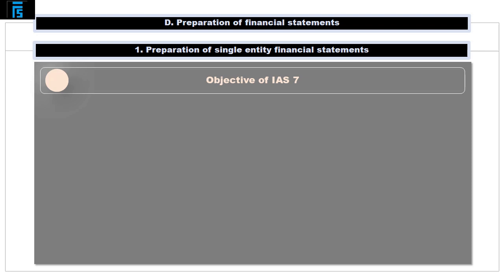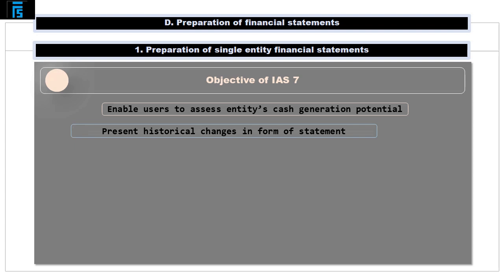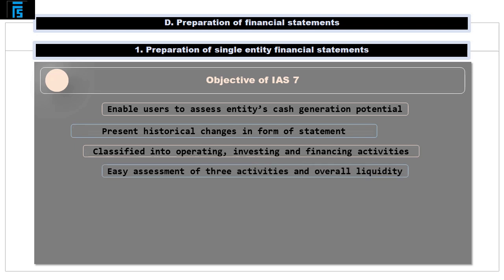The stated objective of IAS 7 is to provide users of financial statements with a basis to assess an entity's potential to generate cash as well as its cash needs. This is achieved by requiring preparers of financial statements to present historical changes in cash and cash equivalents in a statement which classifies cash flows during the period into those associated with operating, investing and financing activities. Such classification should allow readers of financial statements to properly assess the impact of the three types of activity on the overall liquidity of the entity.